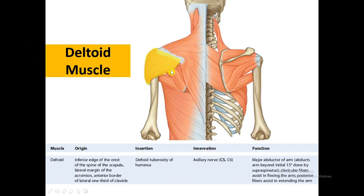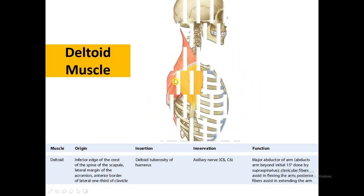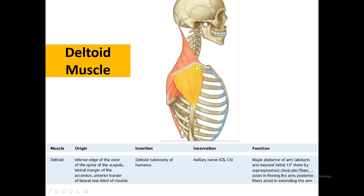The second muscle in our list is the deltoid, shown here in yellow. The deltoid originates from the inferior edge of the crest of the spine of the scapula, the lateral margin of the acromion, and the anterior border of the lateral one-third of the clavicle. On the lateral view, we can see the deltoid originating from the lateral one-third of the clavicle and inserting on the deltoid tuberosity of the humerus.